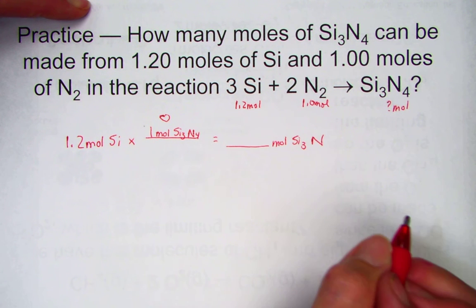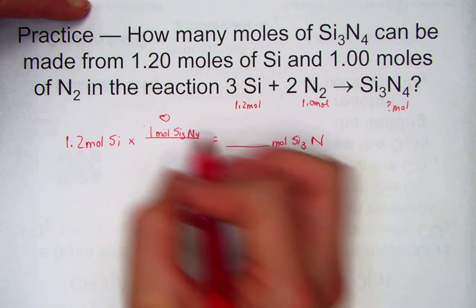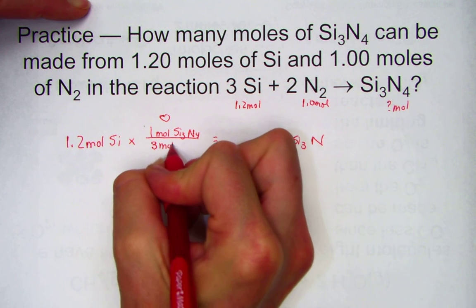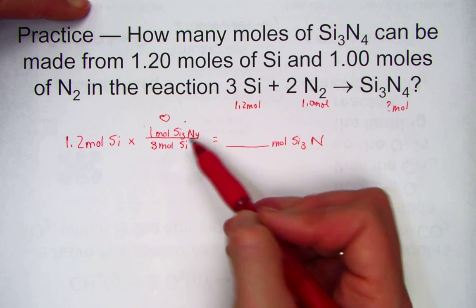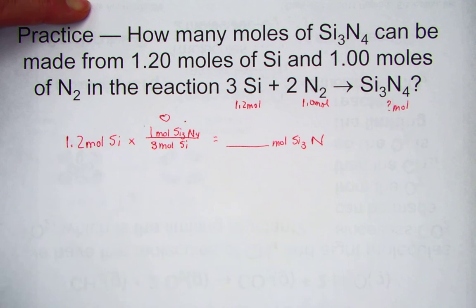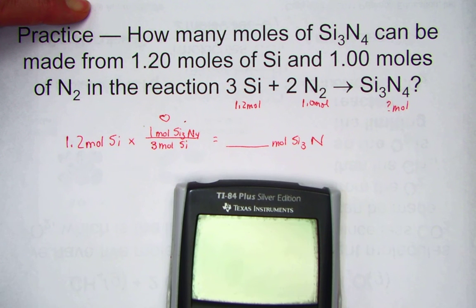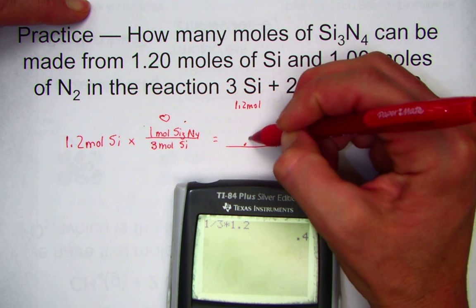It's saying suppose instead of one molecule, we start with five molecules of CH4. And instead of two oxygens, we give eight molecules of oxygen. What is the limiting reactant?